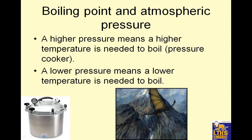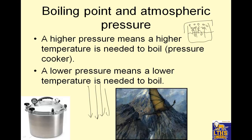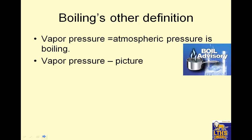Boiling point and atmospheric pressure: higher pressure means a higher temperature is needed to boil, like a pressure cooker. If there's high pressure, particles are smacking the liquid back down — get back in that water. The higher the pressure, the harder it is to go from liquid to gas. A lower pressure means a lower temperature is needed to boil. Up on a mountain, there's much less air pushing down, so less pressure, lower boiling point. Boiling's other definition: vapor pressure equals atmospheric pressure.